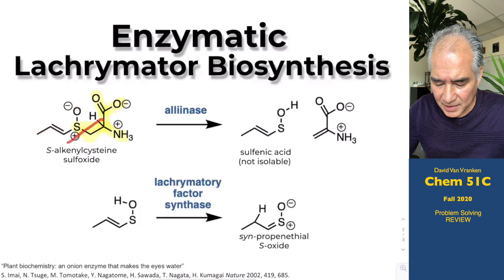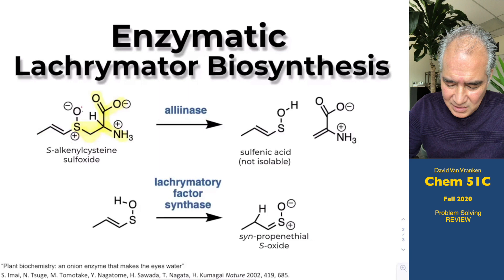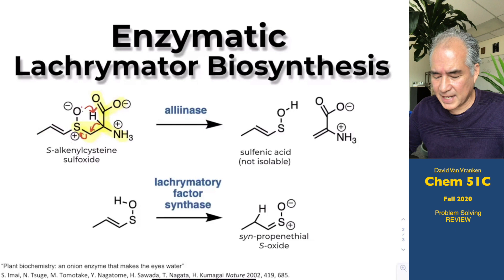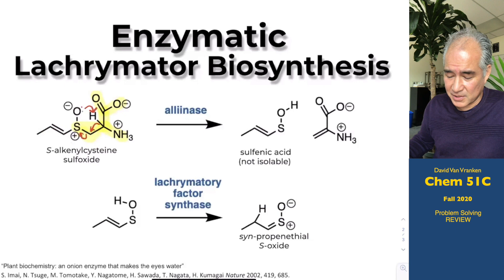The O-minus picks up a proton; these electrons kick over here, and these electrons go to sulfur. That's referred to as a retroene elimination reaction, and there's an enzyme that catalyzes it. You could do that in the laboratory if you heated this to about 150 degrees, but in the presence of alliinase it occurs at room temperature, possibly below.